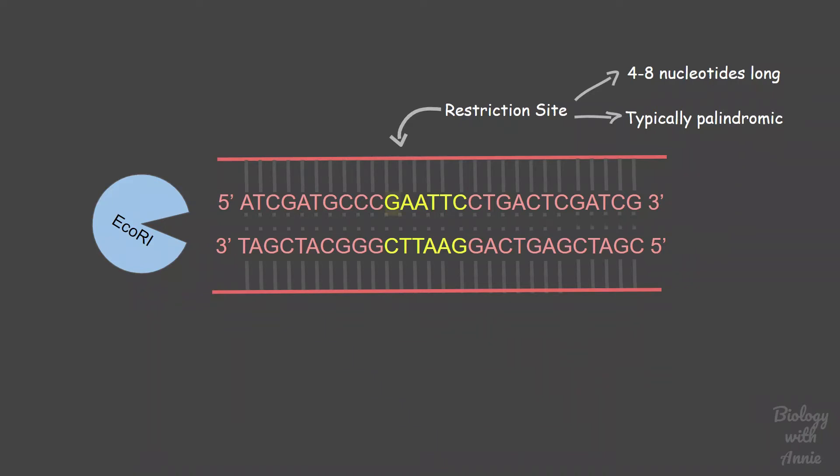Here the sequence G-A-A-T-T-C is present in both strands but is inverted and in reverse order. This provides symmetry so that restriction enzymes can recognize the restriction site on both strands.